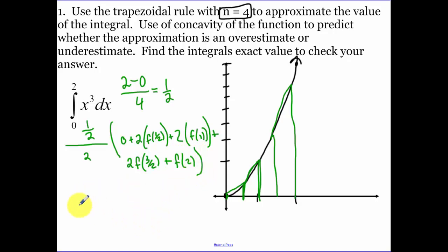Plugging all that in, we get 1/4 on the outside, and we have a 1/4 plus 2 plus 27/4 plus 8. So that's going to be 17/4. Now they ask me to determine, is it an overestimate or an underestimate? Is this graph concave up or concave down? It's concave up, so this is an overestimate.